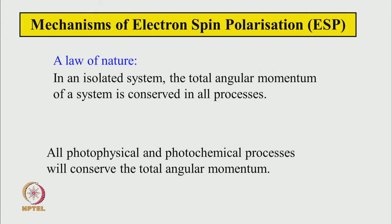This is the background of observations. Now, can we understand why these signals are appearing in this fashion? What are the mechanisms of electron spin polarization?